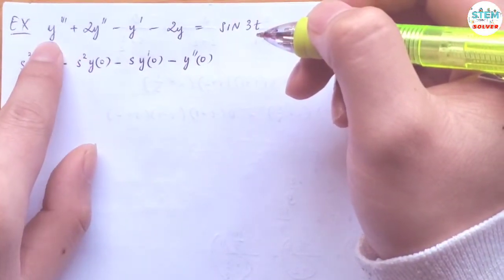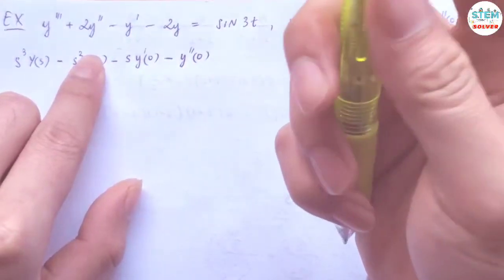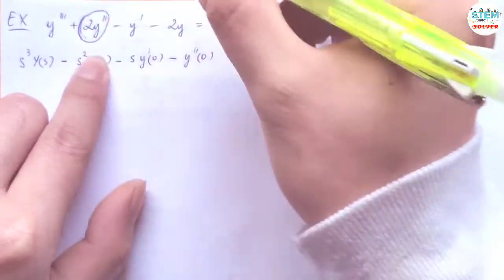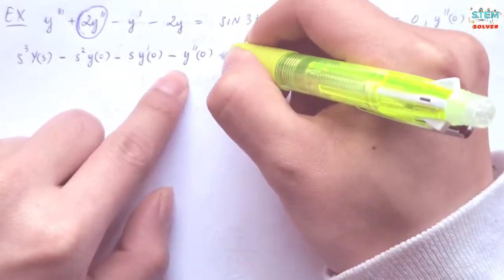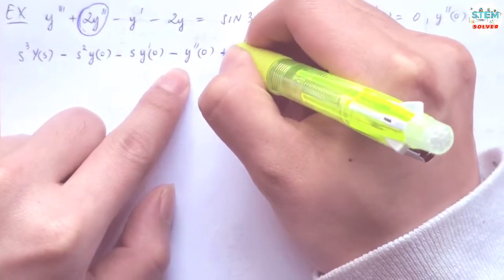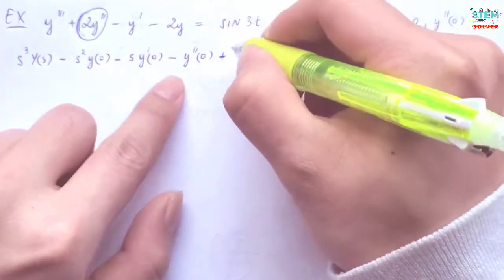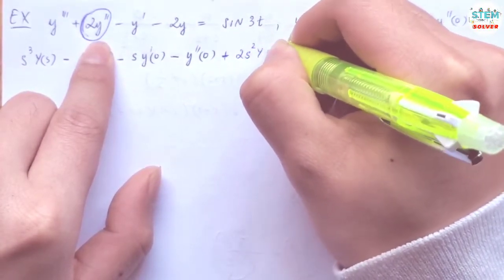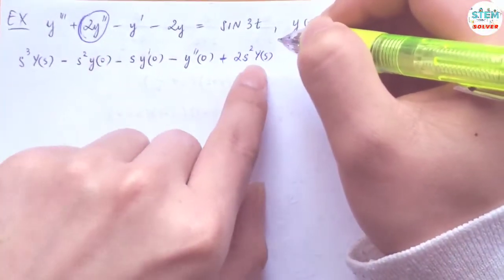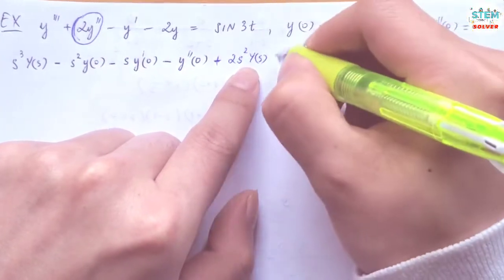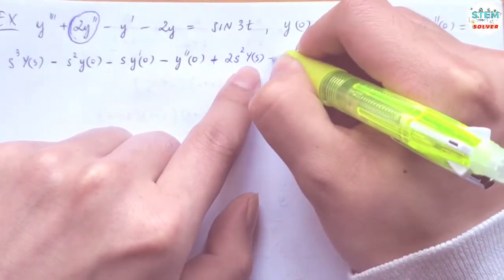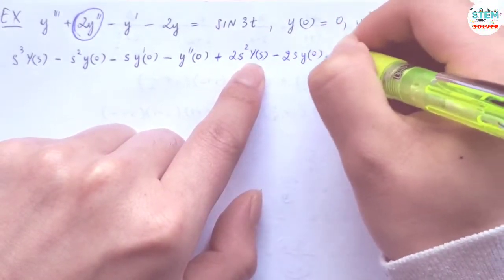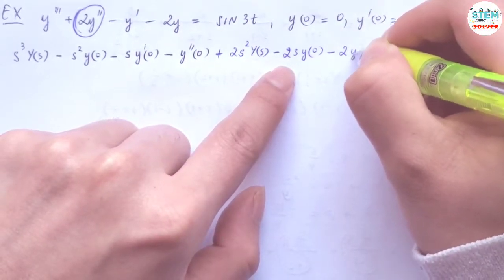So this is what we have for y triple prime. Now for y double prime, we do the same thing, distributing the coefficient 2. So you have 2s squared times capital Y(s), then subtract down: minus 2 times s times y(0), minus 2 times s to the zero times y prime(0).